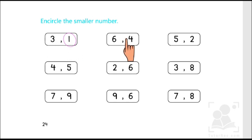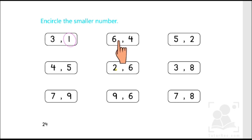Let's move to the next box: six and four. We will start counting from one — one, two, three, four, five, six. As mentioned earlier, the number that comes earlier is the smaller one. Four comes before six, therefore four is the smaller number.